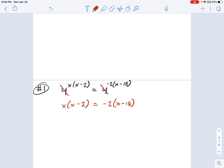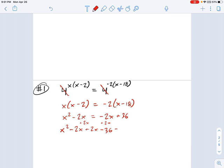So break apart the parentheses. We've got x² - 2x = -2x + 36. Get everything to one side: x² minus 2x plus 2x minus 36 equals 0.